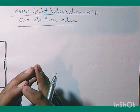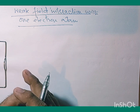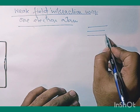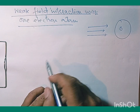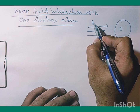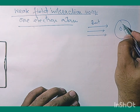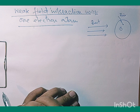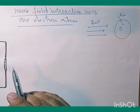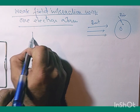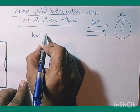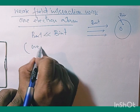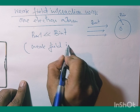We can categorize the situation by comparing the external magnetic field B_external with the internal magnetic field B_internal, which arises from the spin-orbit interaction. If the magnitude of the external field is very much less than the internal field, this is called weak field interaction.